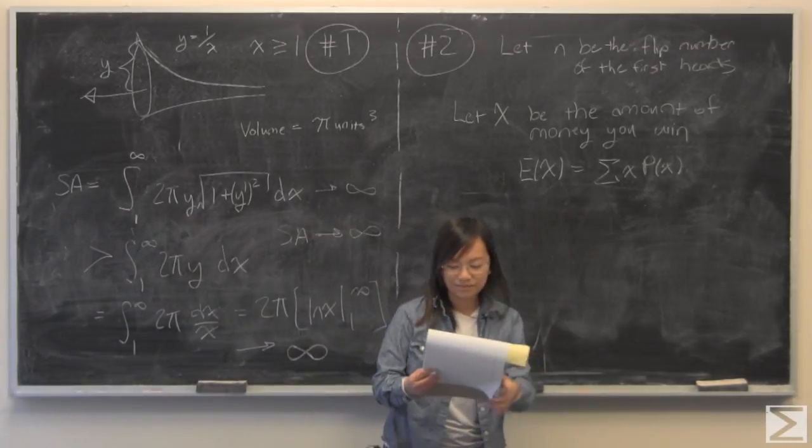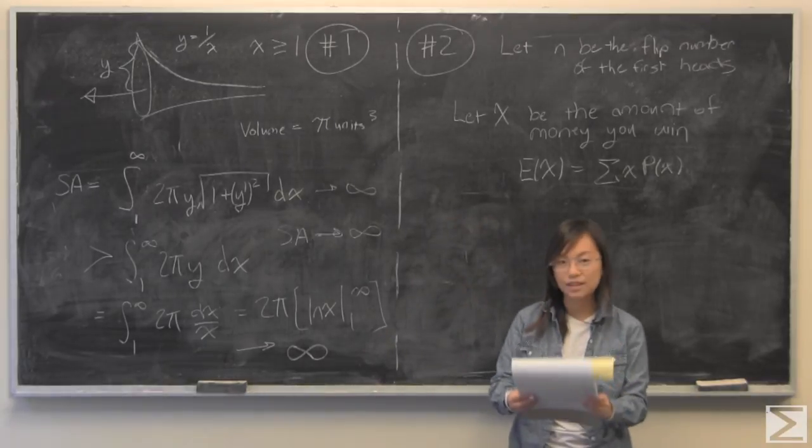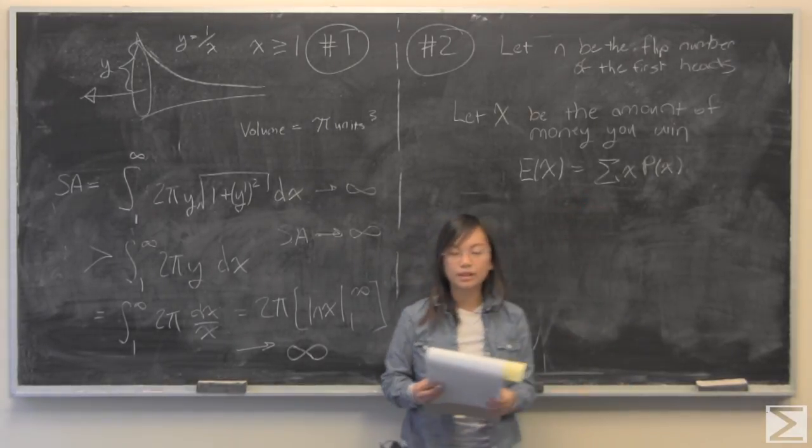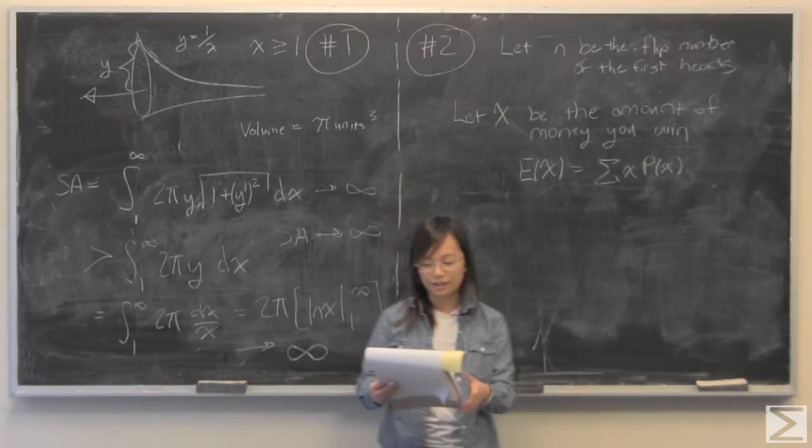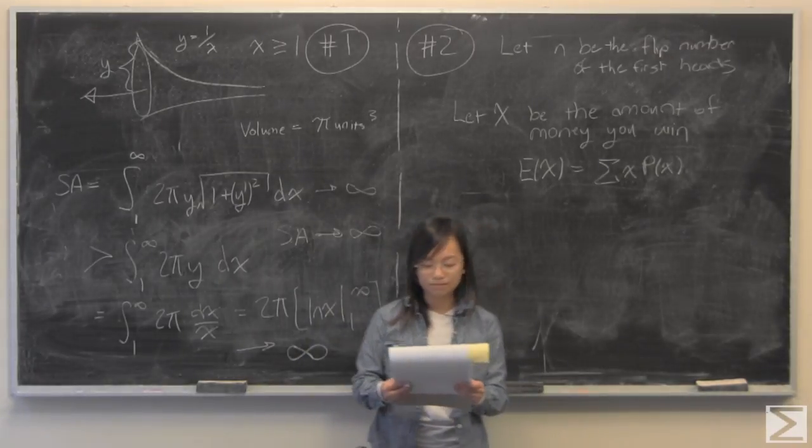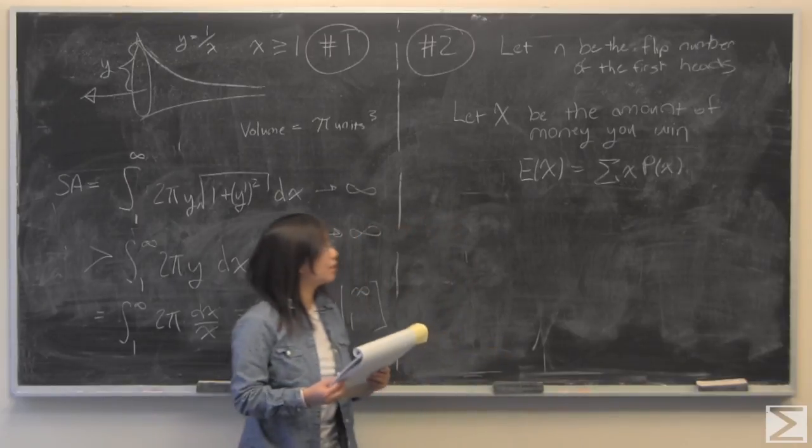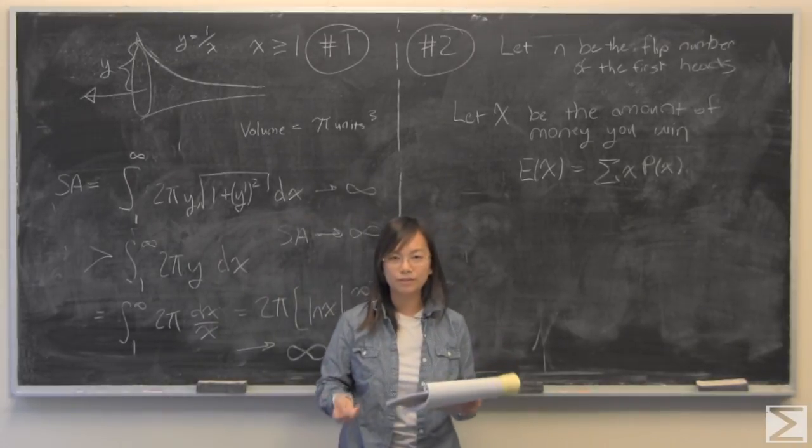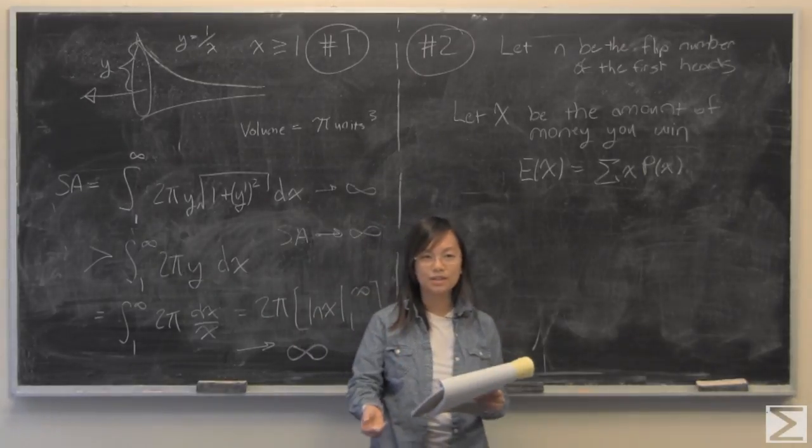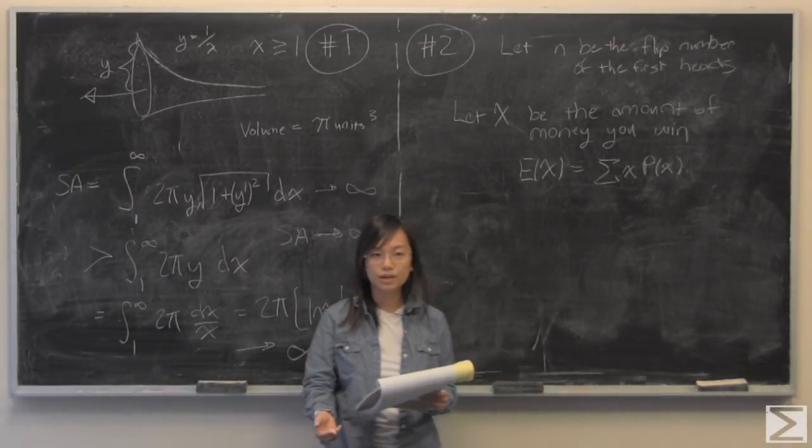For the second one we have what is known as the St. Petersburg paradox. What this says is you are playing a gambling game. I added an initial condition that isn't always added but it is not actually going to matter because of the paradoxical result. So what you have is you flip a coin.